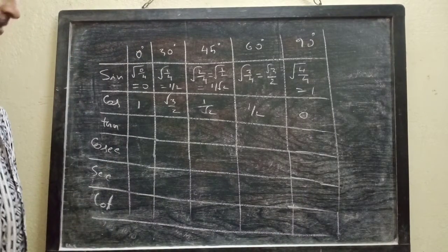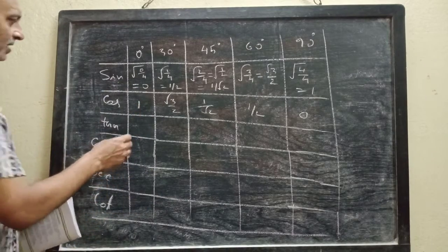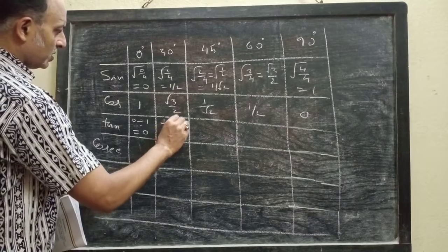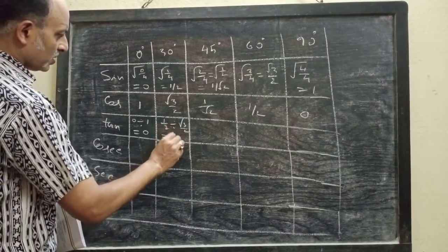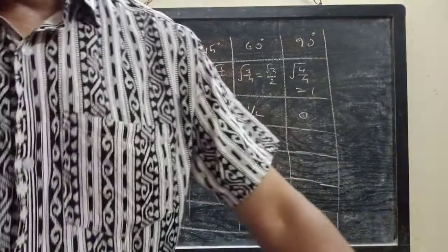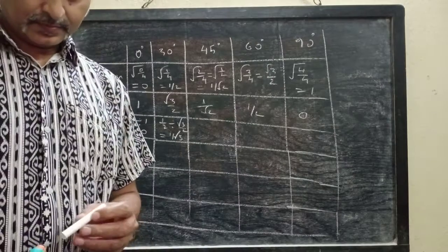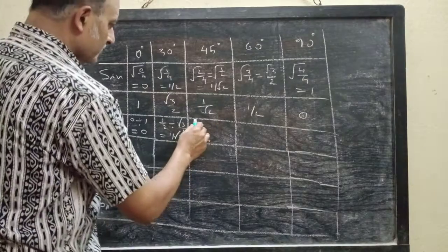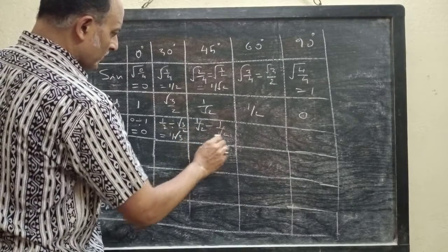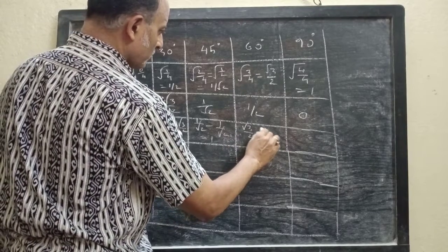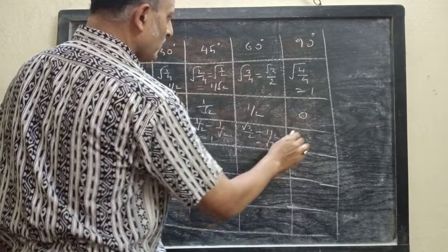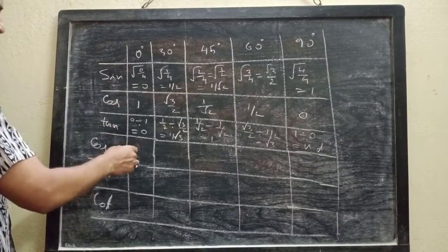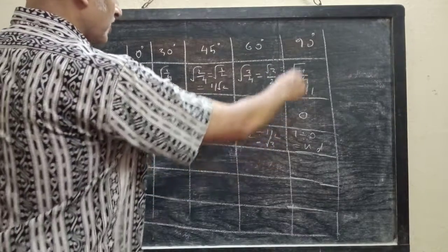We know for any angle, the ratio of sin and cos is tan. So: tan 0° = 0 ÷ 1 = 0. Next, (1/2) ÷ (√3/2) gives 1/√3. Next, (1/√2) ÷ (1/√2) = 1. Then √3/2 ÷ 1/2 = √3. And 1 ÷ 0 is undefined. So: tan 0° = 0, tan 30° = 1/√3, tan 45° = 1, tan 60° = √3, tan 90° = undefined.